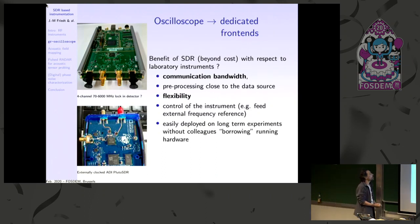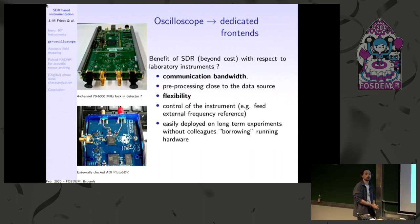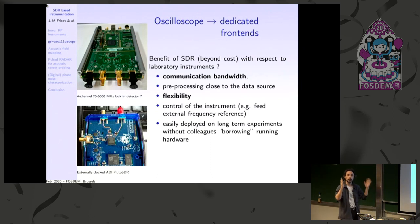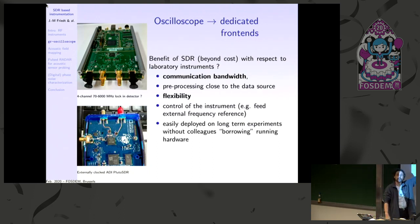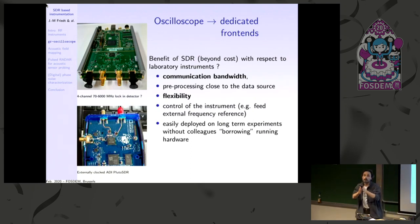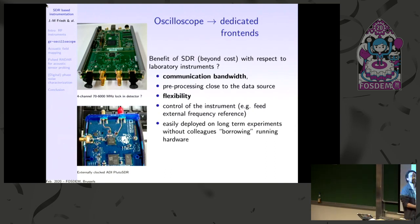This motivated using SDR front ends instead. Two B210s, locked with a 1 PPS signal, form a coherent four-channel lock-in detector, provided the data stream is kept running continuously to avoid losing the phase condition. The advantage over a traditional lock-in amplifier is that data are streamed continuously rather than fetched via VXI or GPIB, enabling faster and more flexible measurements while retaining the ability to tune the instrument's functionality to specific needs.